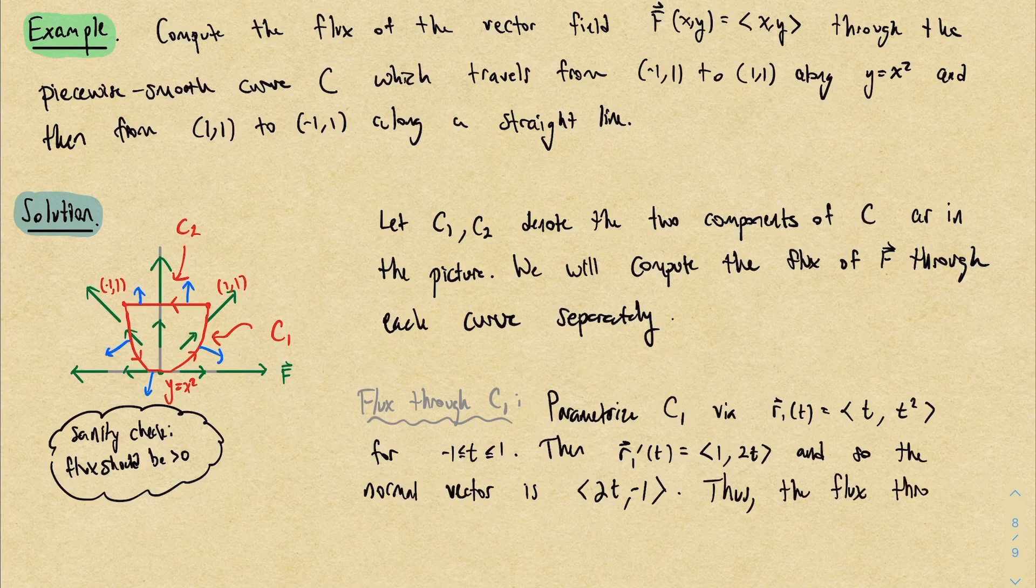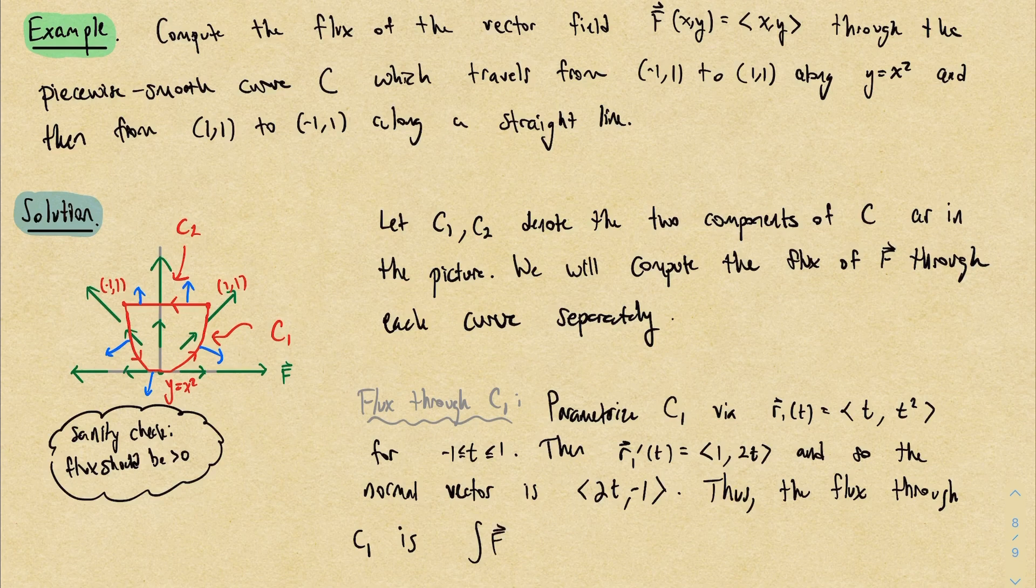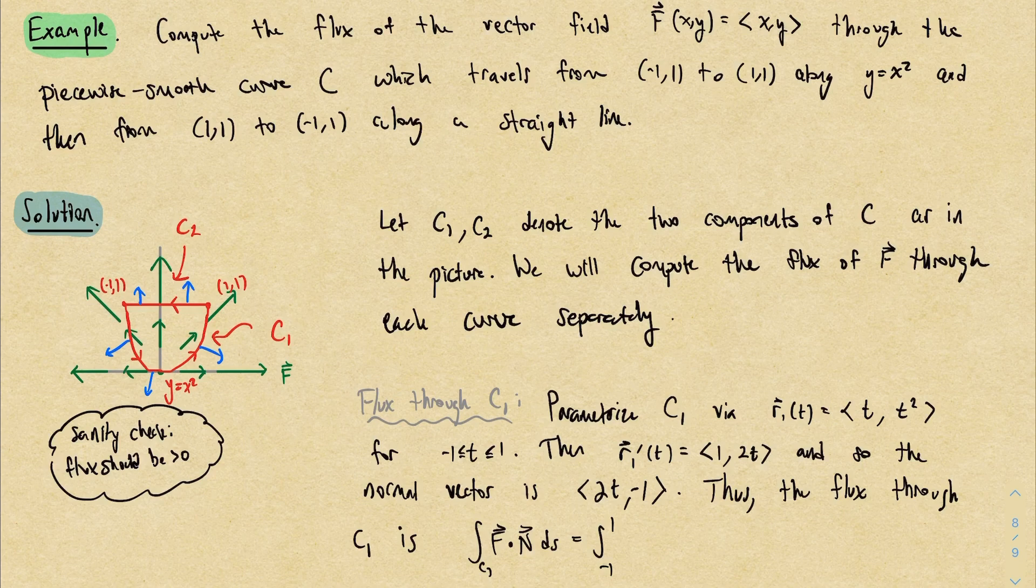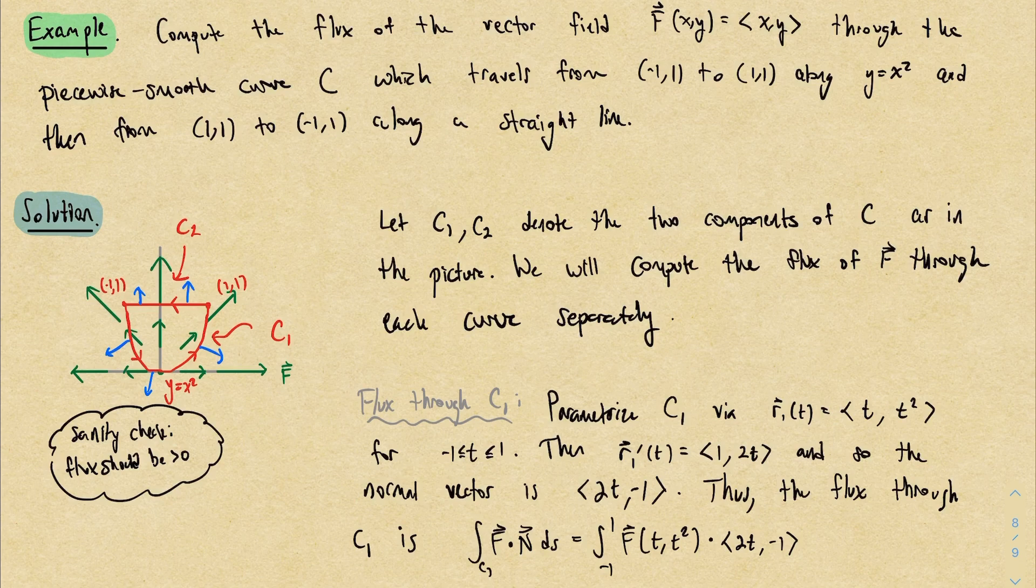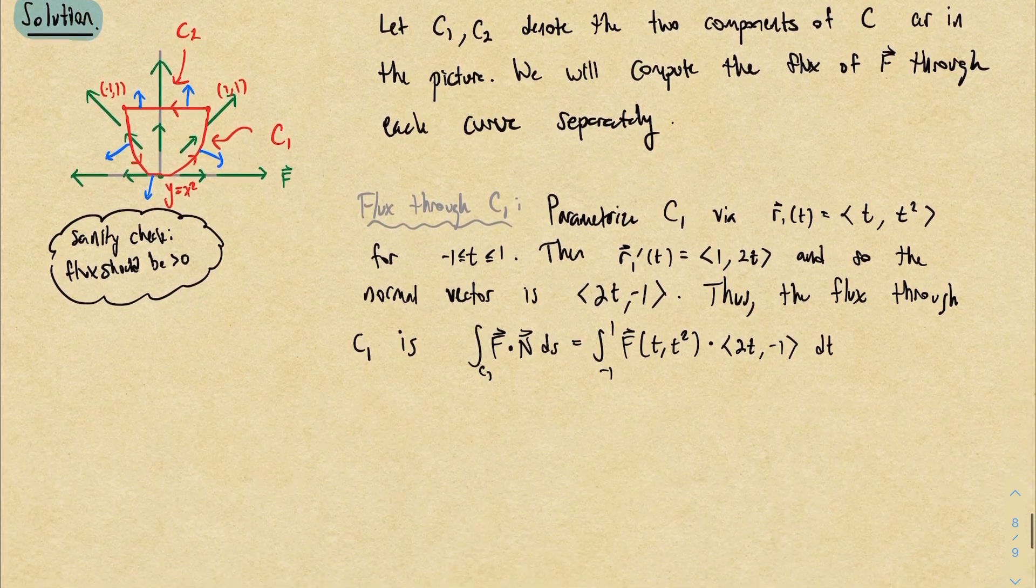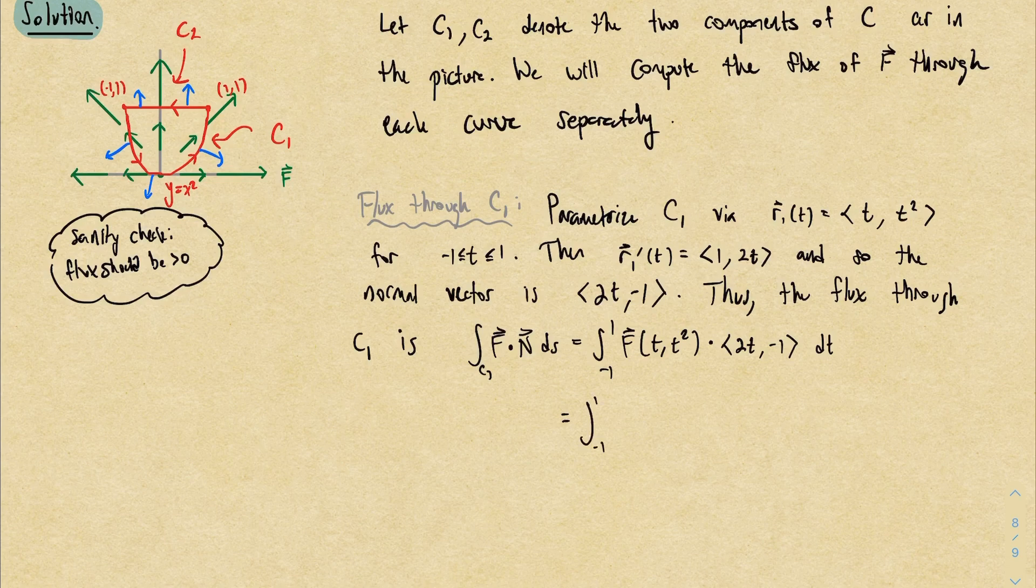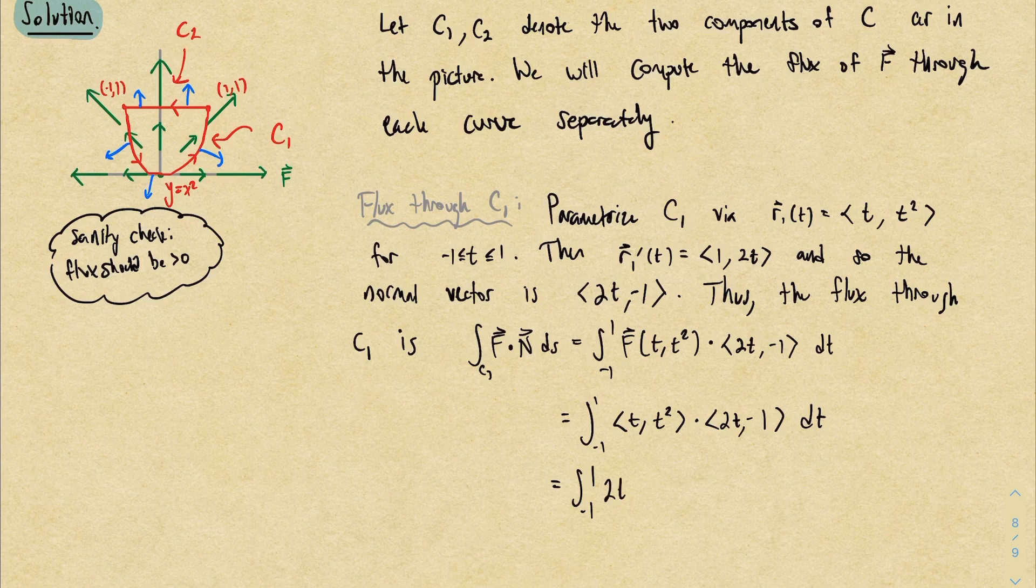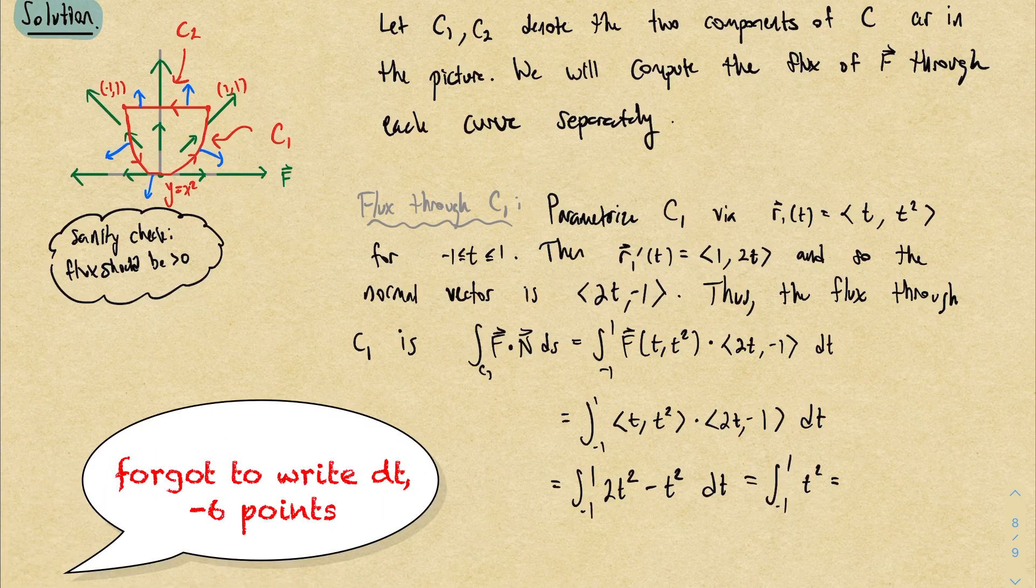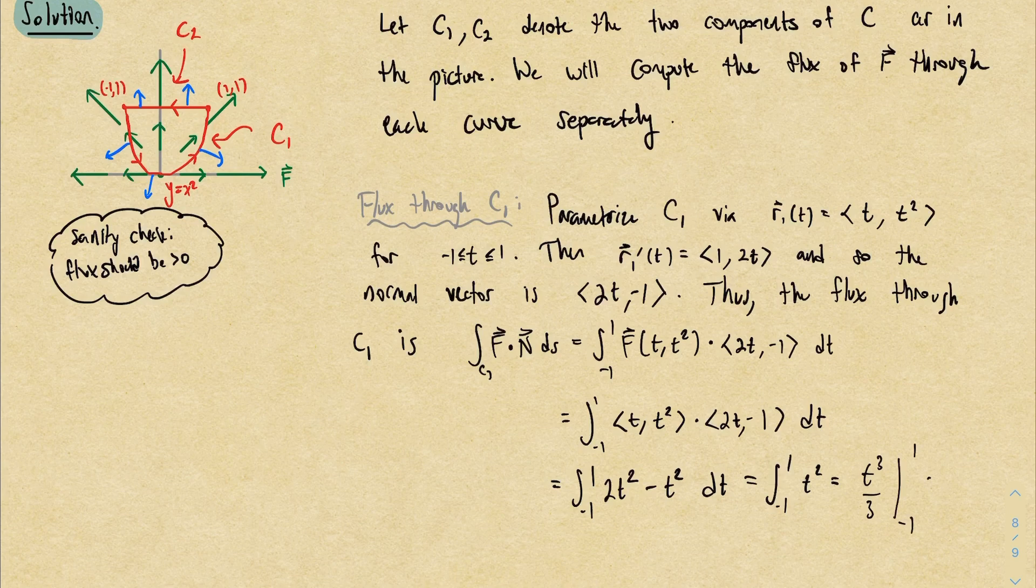Then we're ready to compute. The flux through this curve is going to be, the parameter bounds give me the integral bounds, so from -1 to 1. Then we have f of the parameterization, so f(t, t²), dot the normal vector, (2t, -1). The vector field here is (x, y), so f(t, t²) is just going to be the vector (t, t²). And then this dot product becomes 2t² - t², which is t². An antiderivative is t³/3. Plug in 1 and -1 and subtract, and you should get 2/3.